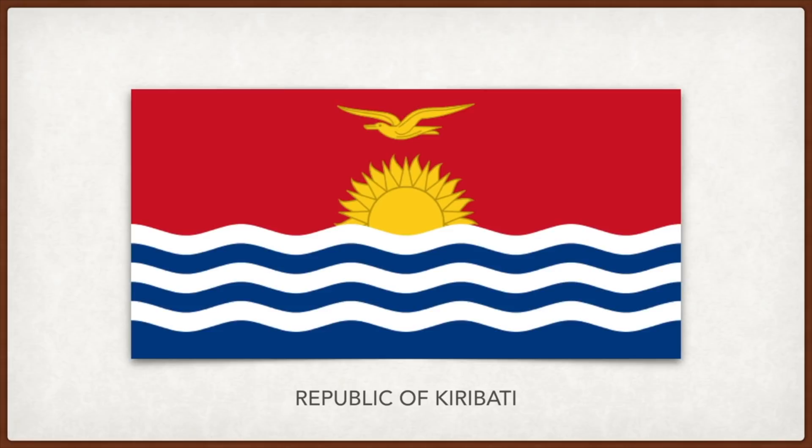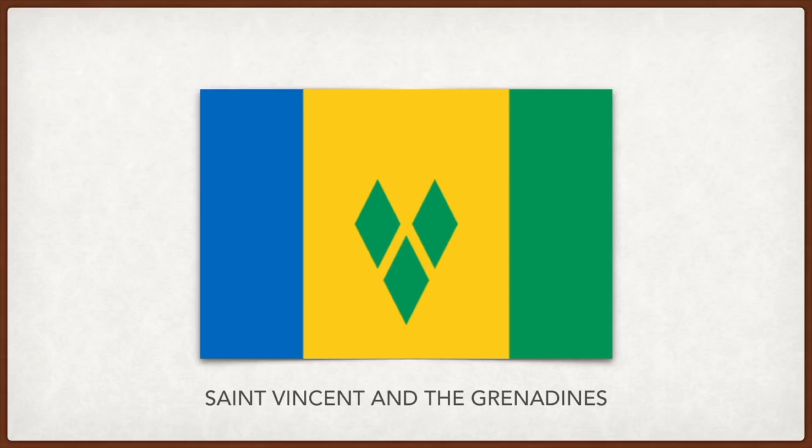Saint Vincent and the Grenadines: the three green diamonds are called the 'gems of the Antilles' or 'jewels of the Caribbean,' and the V-shaped pattern in which the diamonds are arranged is the first letter of Vincent. The green is for the island's vegetation and the vitality of the people, the yellow for the sand and warmth of the people, and the blue is for the sea and sky.